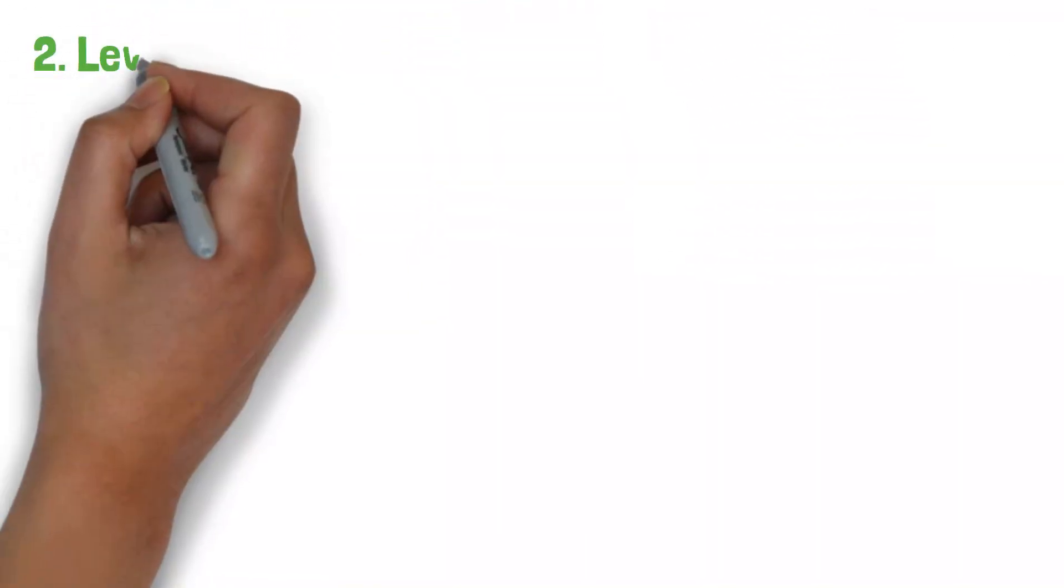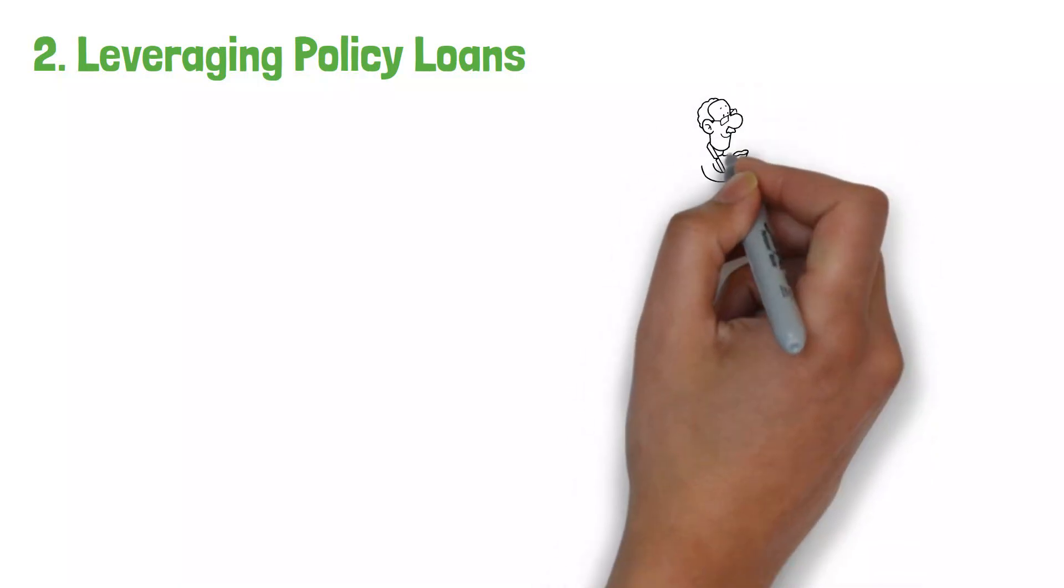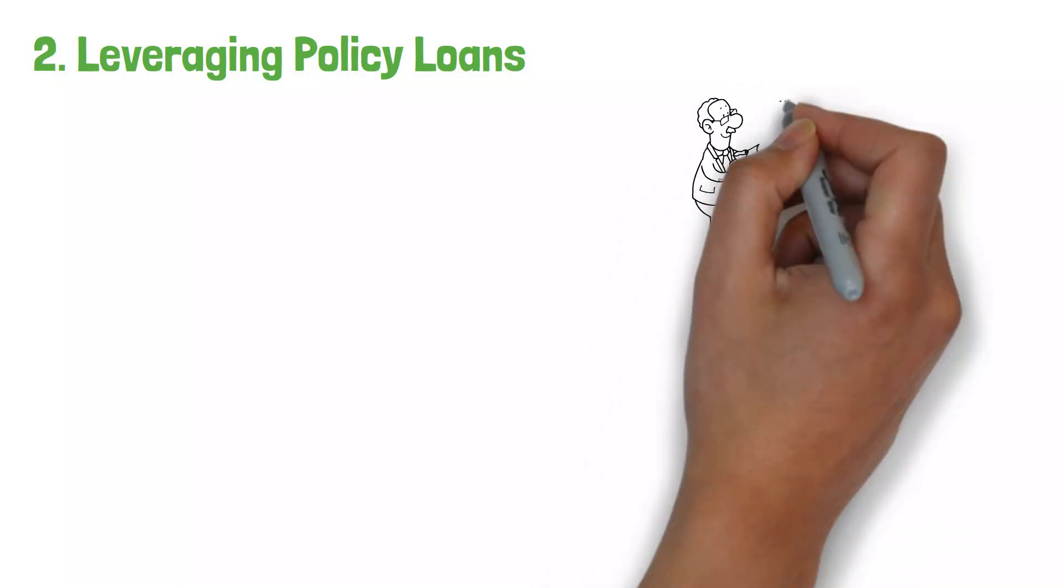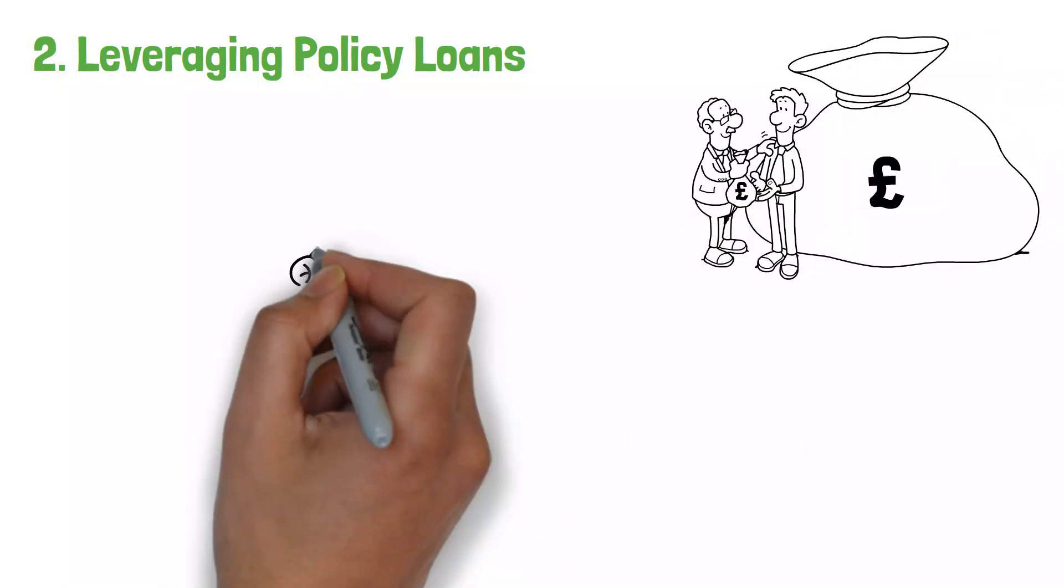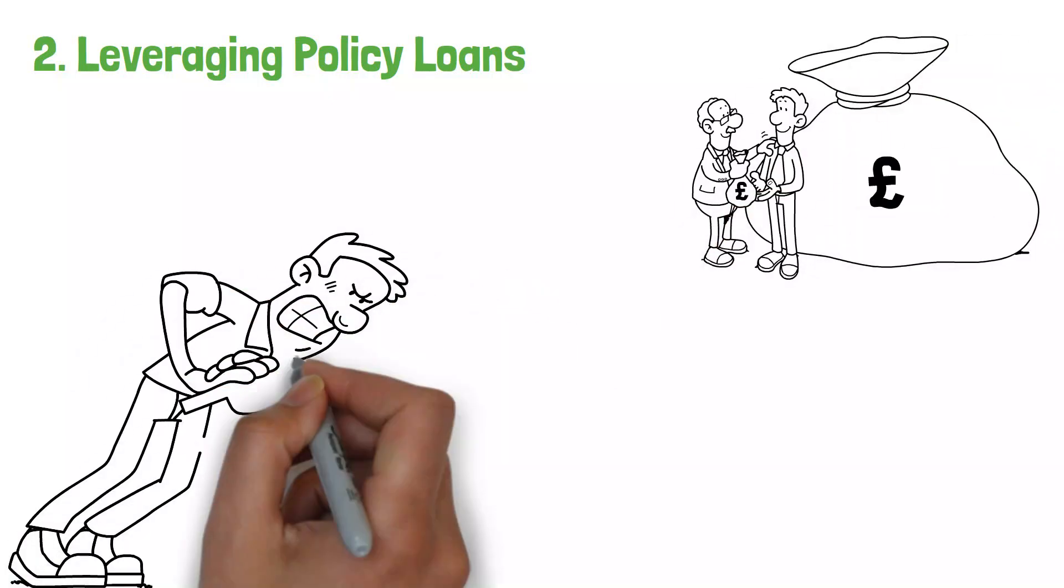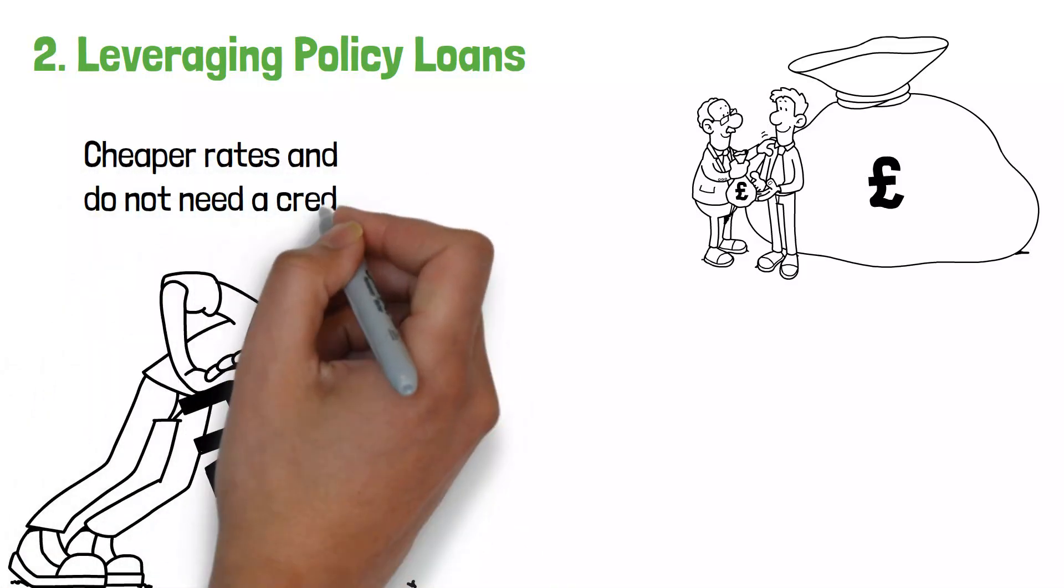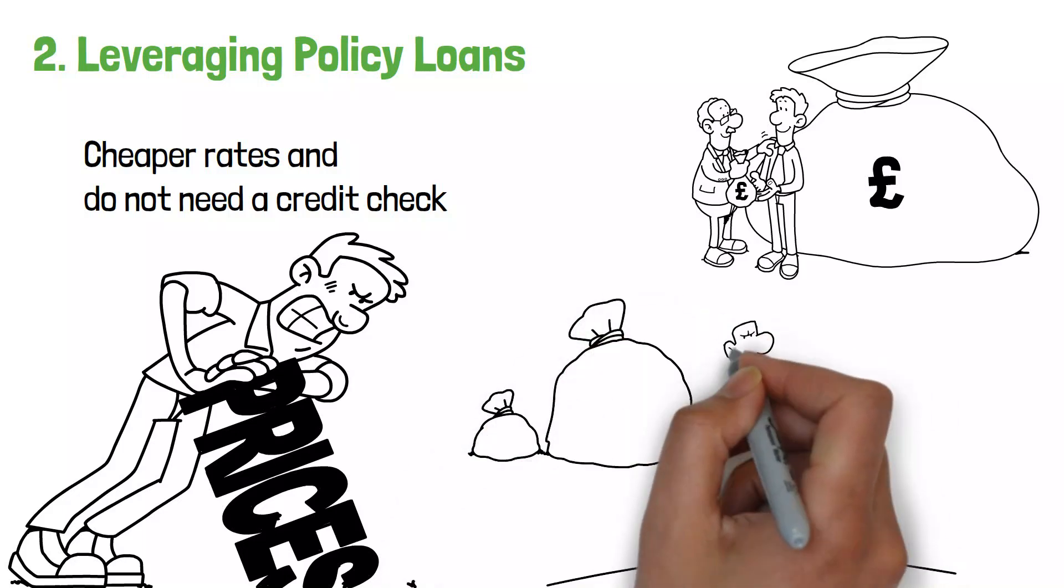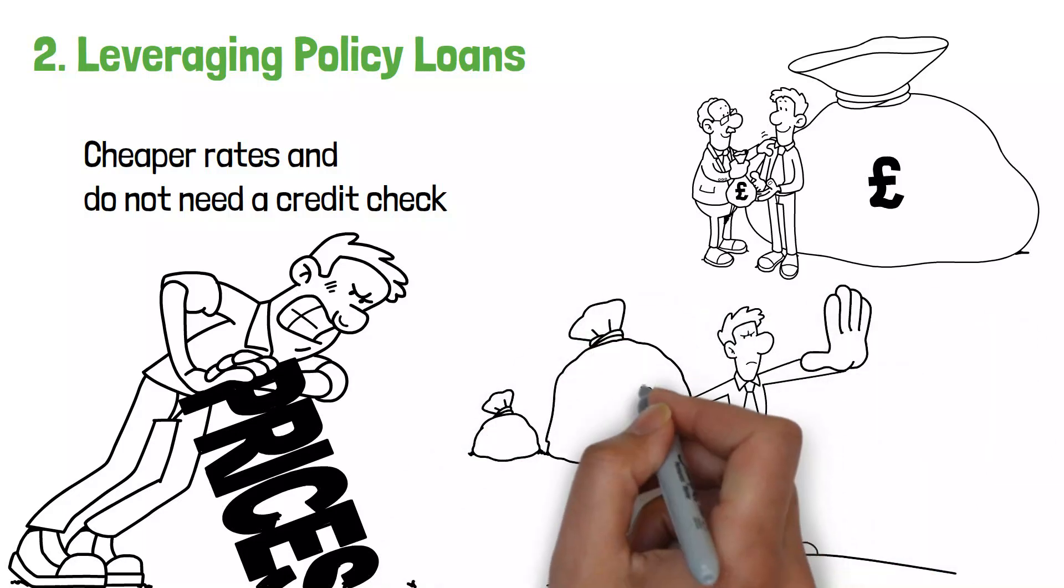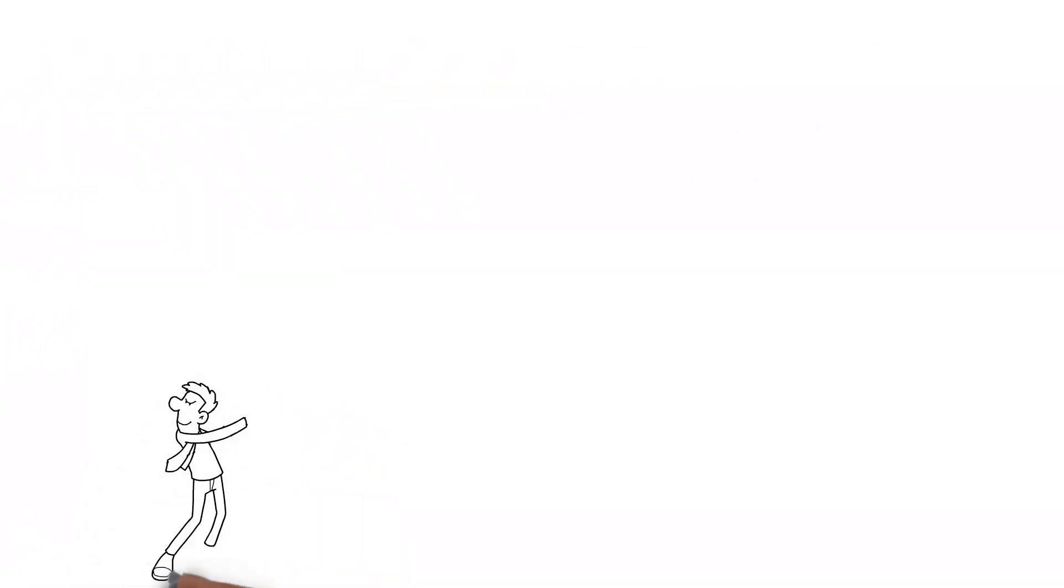Number 2. Leveraging Policy Loans. One distinguishing characteristic of cash value life insurance is the option to borrow against the policy's cash value. Policy loans are often available at cheaper interest rates than standard loans and do not need a credit check. The policy's cash value acts as security, and the loan does not have to be paid back during the policy's lifetime, since the remaining sum is taken from the death benefit.